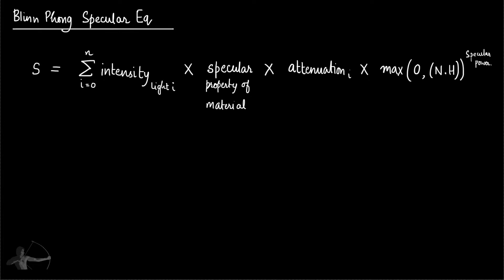Hello everyone. In this chapter we will write a specular shader and we will use the equation that we derived in the previous one. So this is the equation that we derived or we understood in the previous chapter. We understood each and every component of this equation and now we will see how we can calculate these elements in Unity.